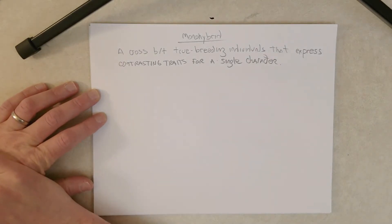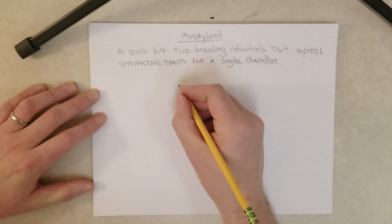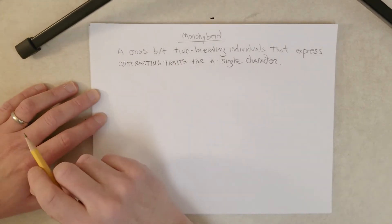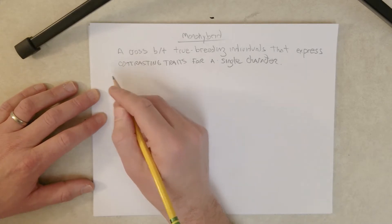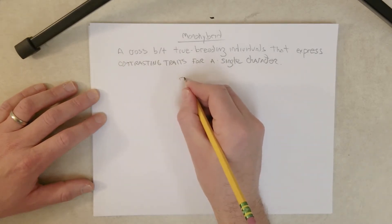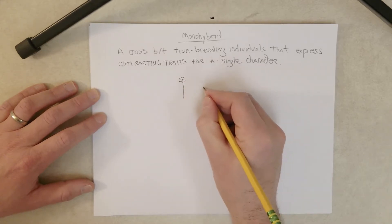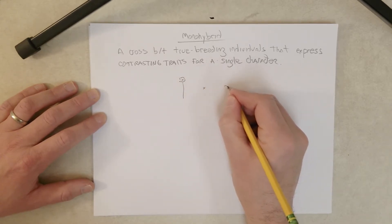Okay, so let's look at one of Mendel's monohybrid crosses. The trait or character we're going to look at is plant height, and he crossed a tall true breeding plant to a dwarf true breeding plant.